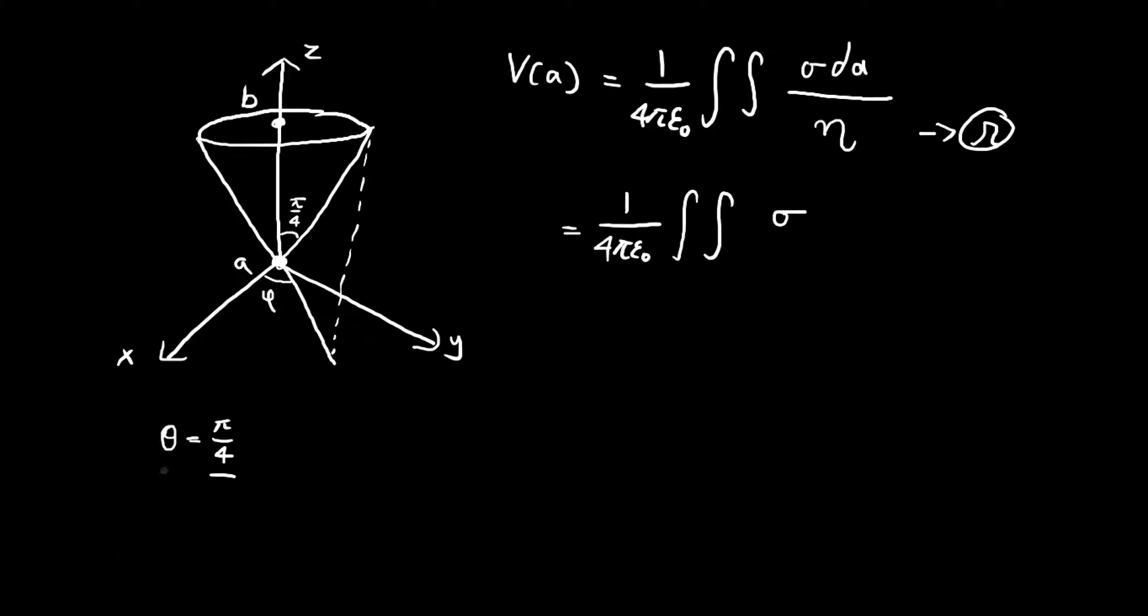For the other variables, we have the radial component r that's going to be a variable. Since the height of the conical shell is h, r is going to go from 0 all the way to the square root of 2 times h.